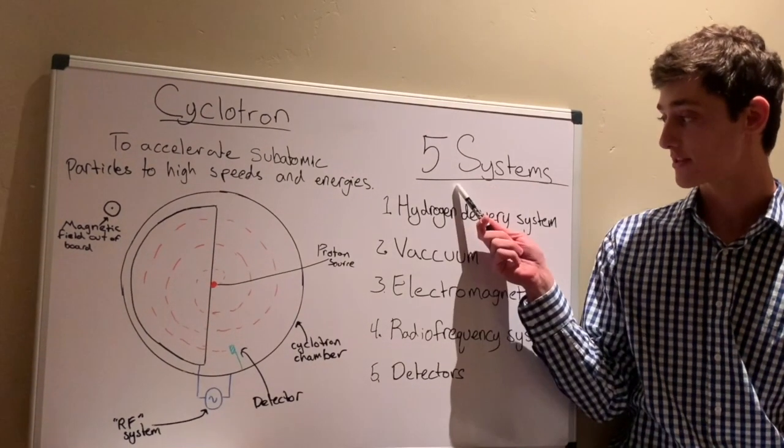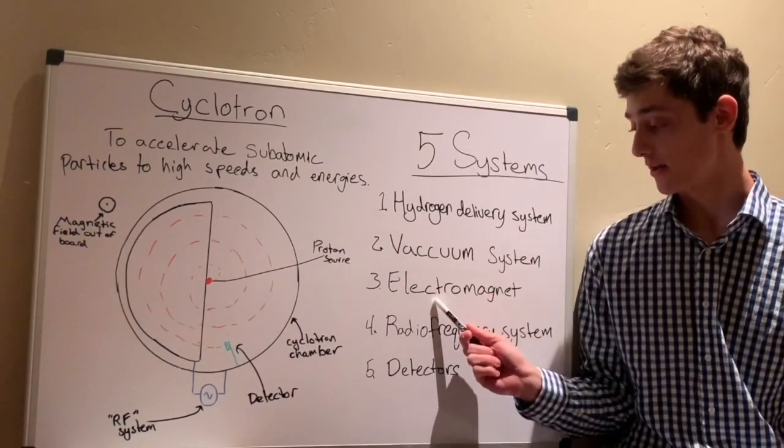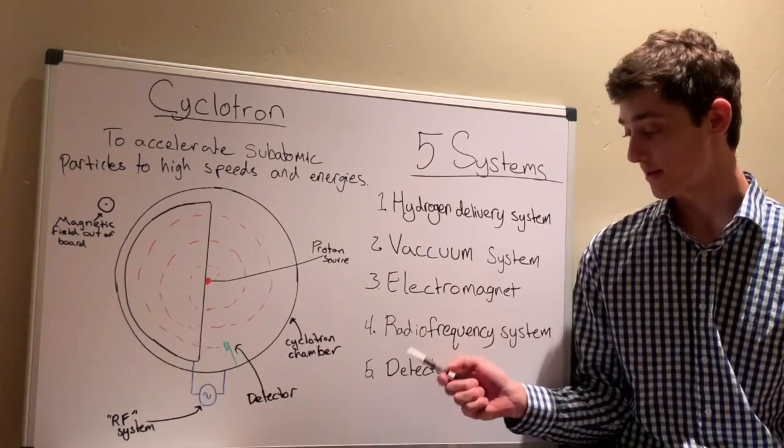The cyclotron itself is comprised of five systems: the hydrogen delivery system, vacuum system, electromagnet, radio frequency system, and the detectors.